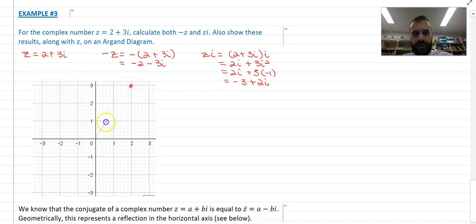So z equals 2 plus 3i. That's easy enough. And again, you can think of it as a vector. Negative z is just that one spun 180 degrees. We've done that, so we're okay with that. Now, what about zi?